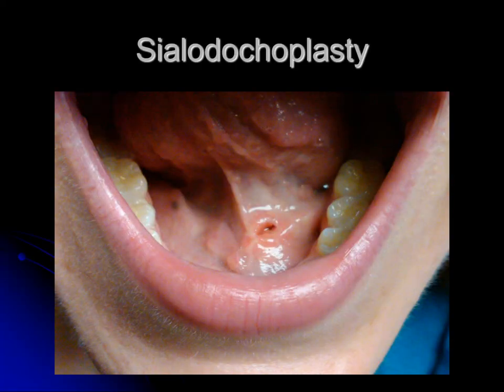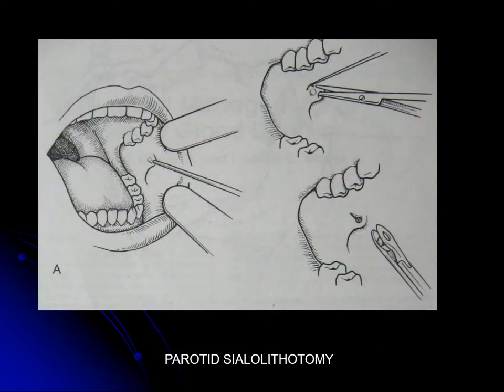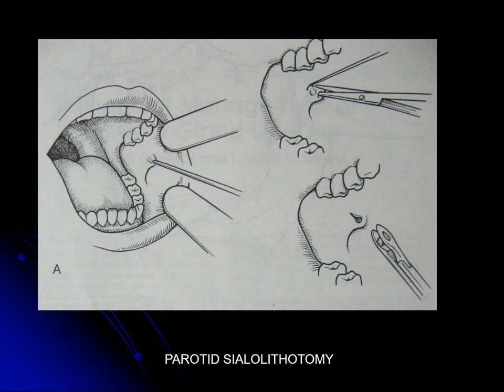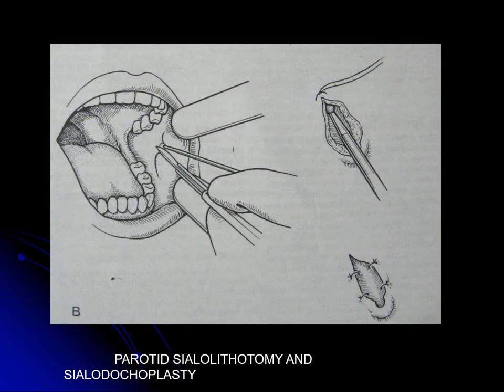Sialodochoplasty is a plastic surgery performed on the salivary gland duct when a small perforation has occurred. The procedure involves identifying the calculus location — similar for submandibular duct — placing a knot to prevent stone retraction, making an incision over the stone, removing it, and suturing properly.